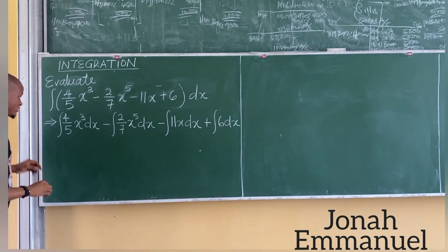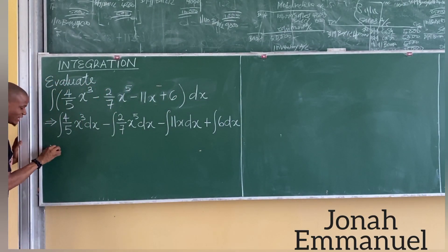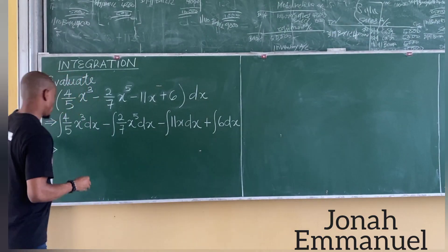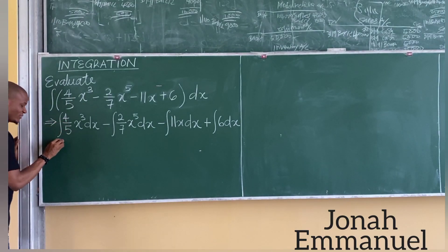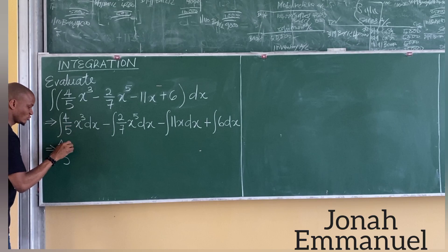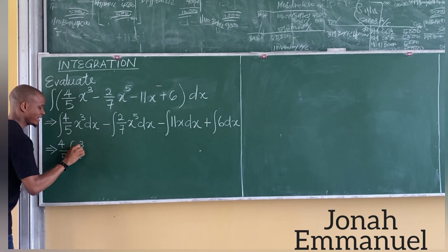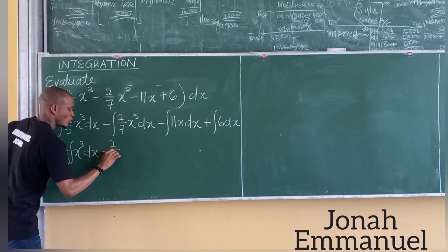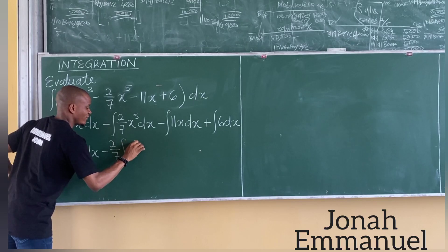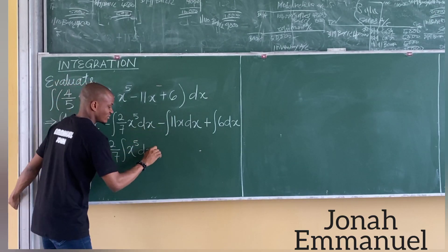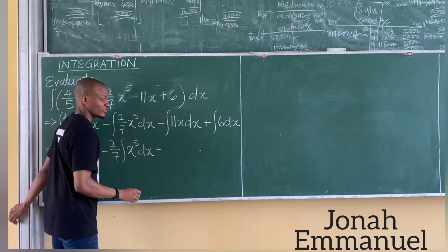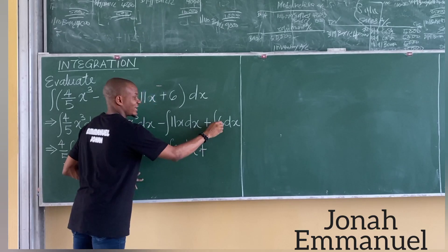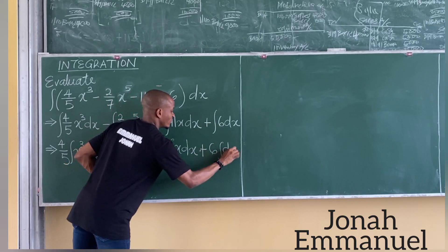Next, take the constant term outside the integral sign. This gives: 4 over 5 integral x cubed dx, minus 2 over 7 integral x to the power 5 dx, minus 11 integral x dx, plus 6 integral dx.